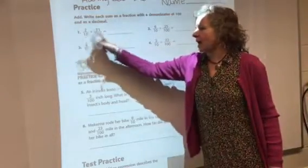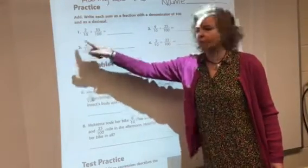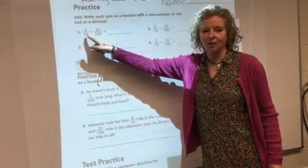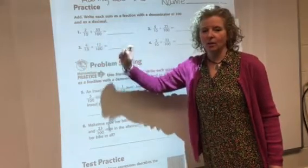Okay, so that means you're going to have to turn these into like fractions. How do you turn two-tenths into a fraction that has a denominator of 100?